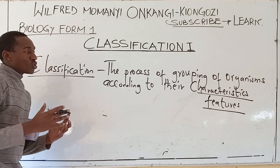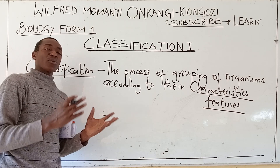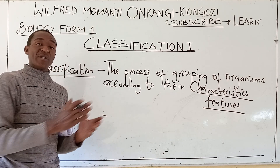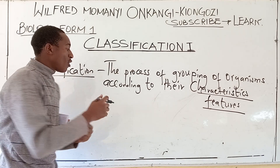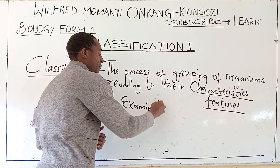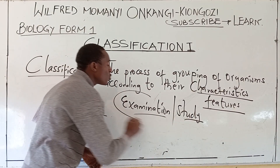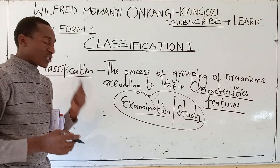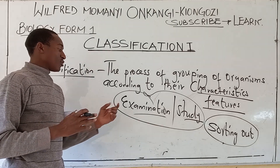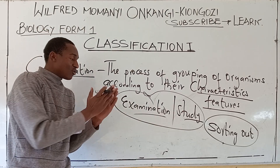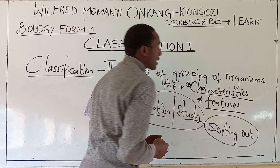Organisms are collected from the environment using the right apparatus or instruments, then brought to the lab for examination — to study them. The reason for examination is to enable you to know where you can group or sort them out. When you look at the characteristics and examine those organisms, you will be able to understand that these ones are grouped this way and belong to this group because of the features or characteristics you have discovered.